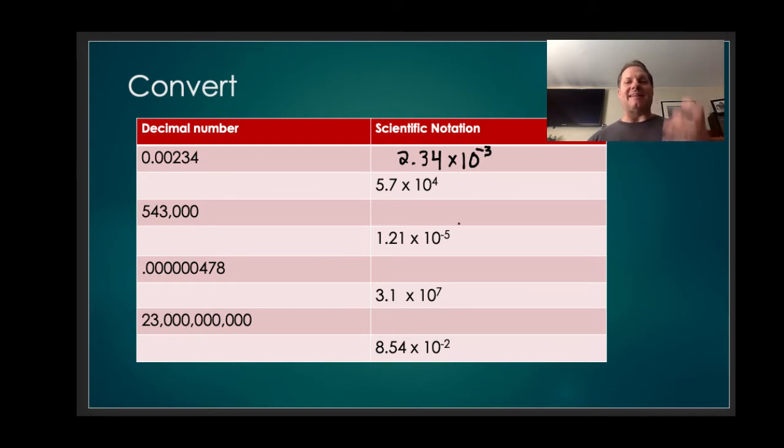It looks like we slid it three times. So that becomes our n value. Now this can be negative or positive. Obviously I'm dealing with a number that's less than 10, it's a small number. So that indicates that that exponent has to be negative 3.